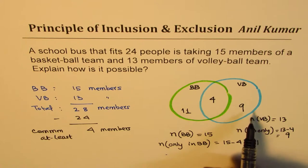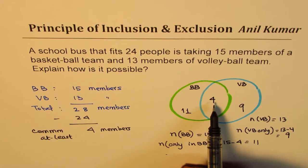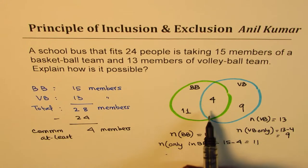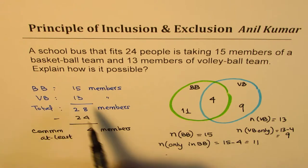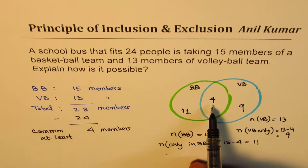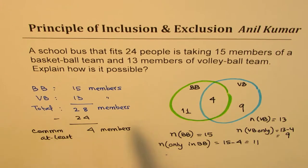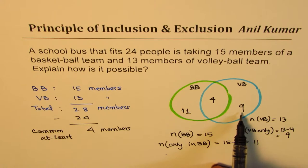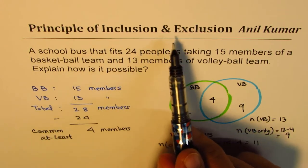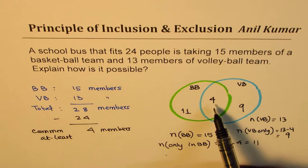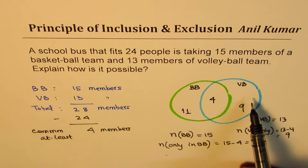You can see that these four members, which are part of both teams, have been included twice while counting 15 and 13 — summing to 28. Since they have been included twice, we have to exclude them to get the real number of people. That is the principle of inclusion and exclusion — whatever gets included more than required should be excluded for getting the correct count.